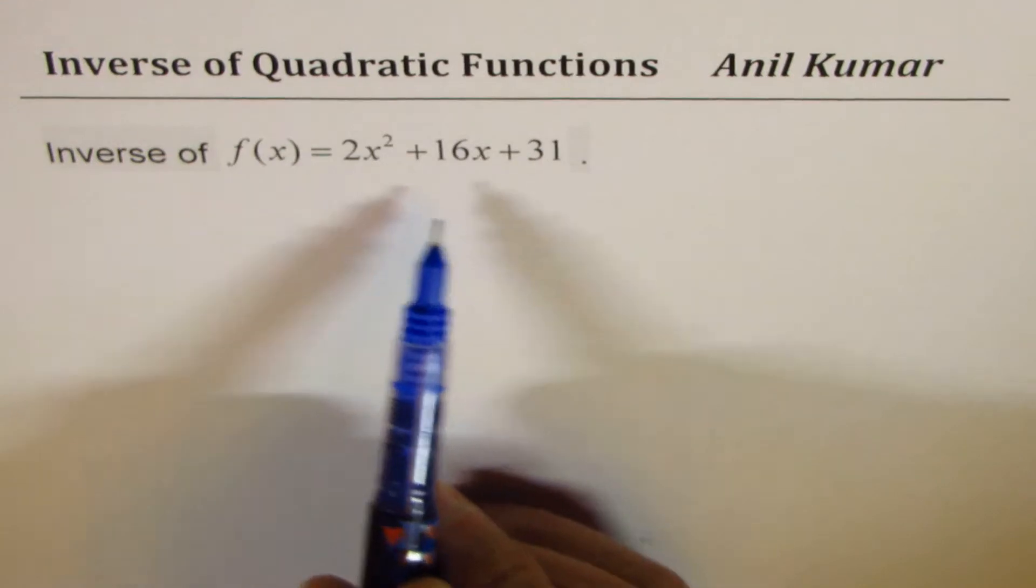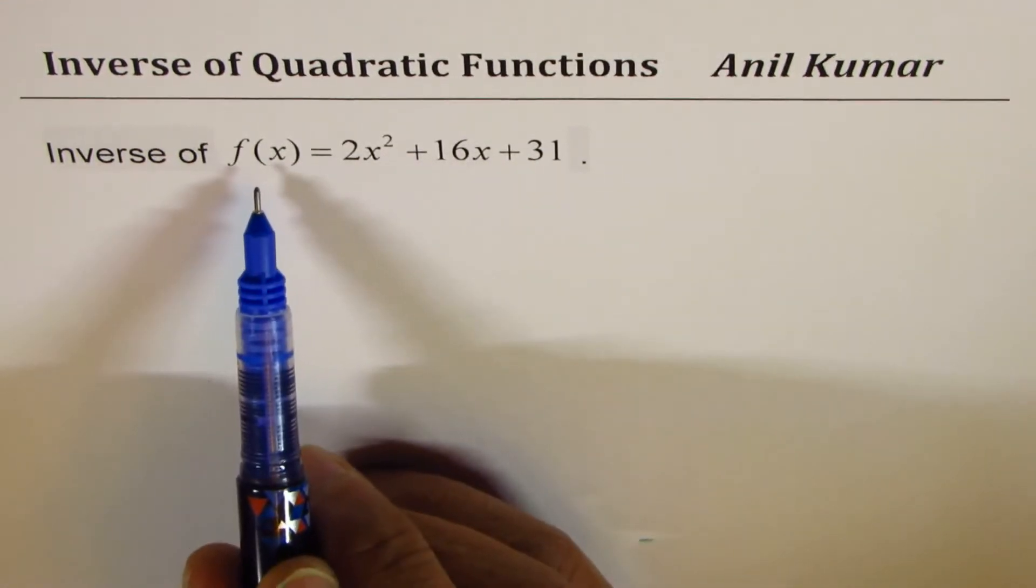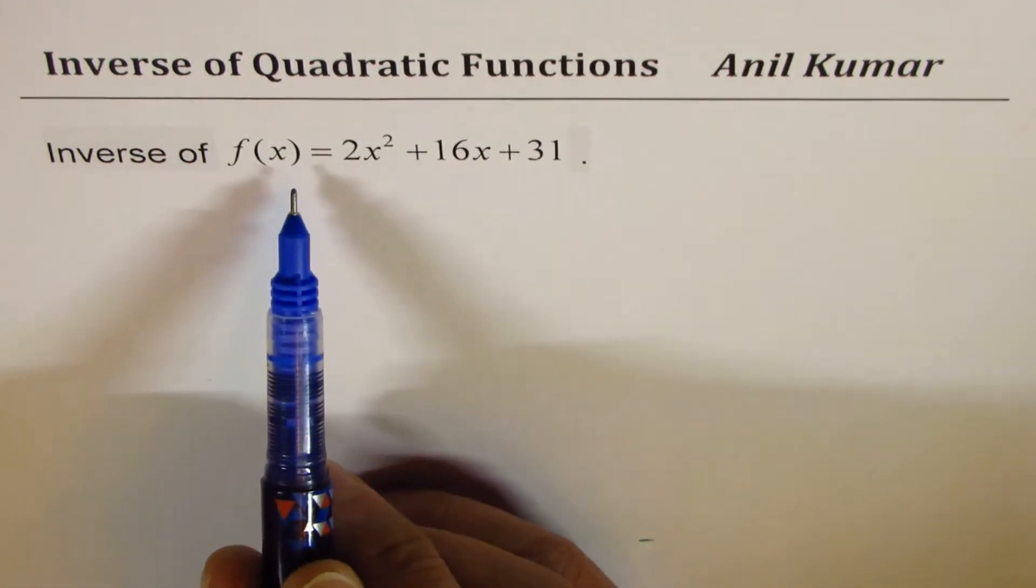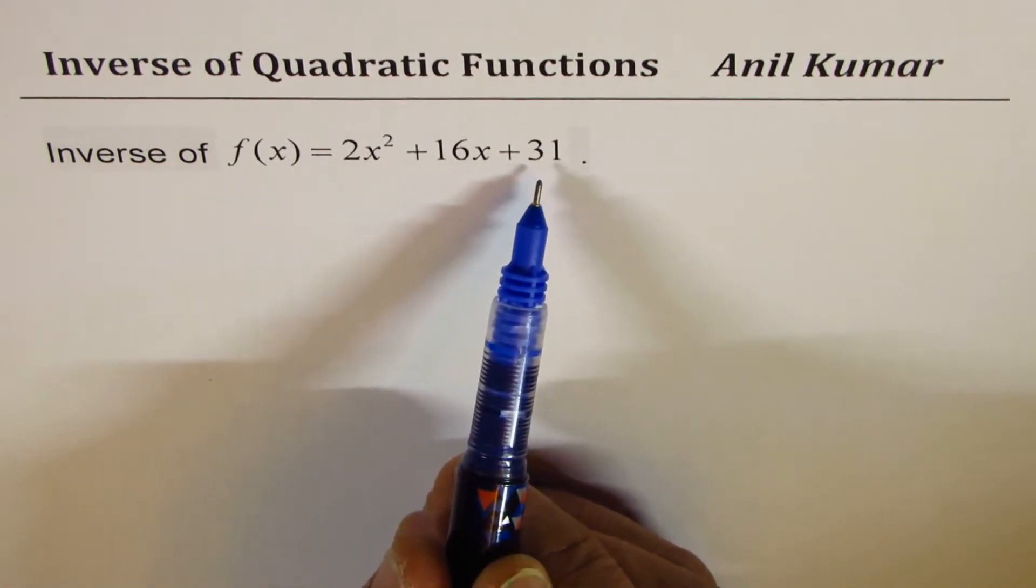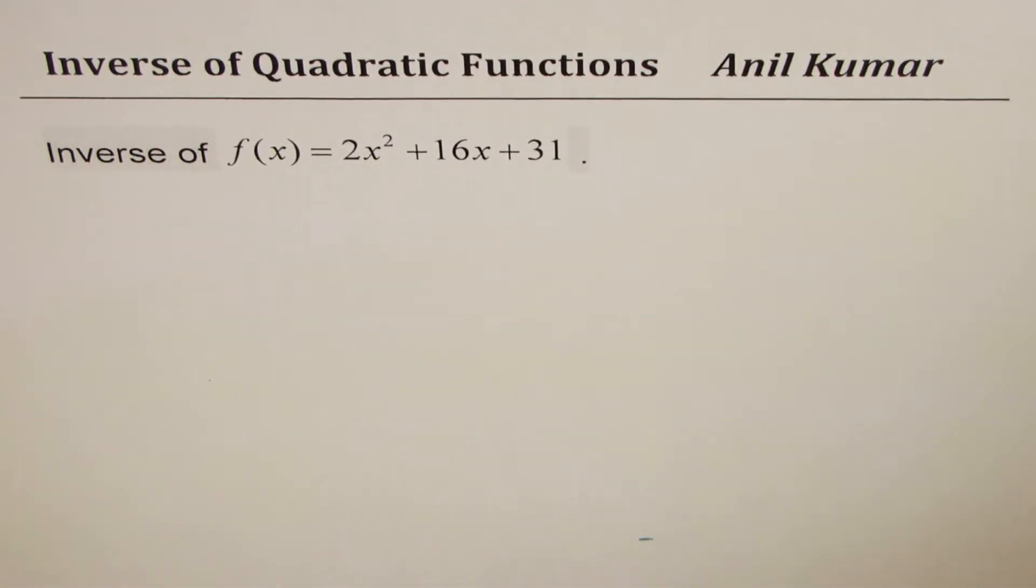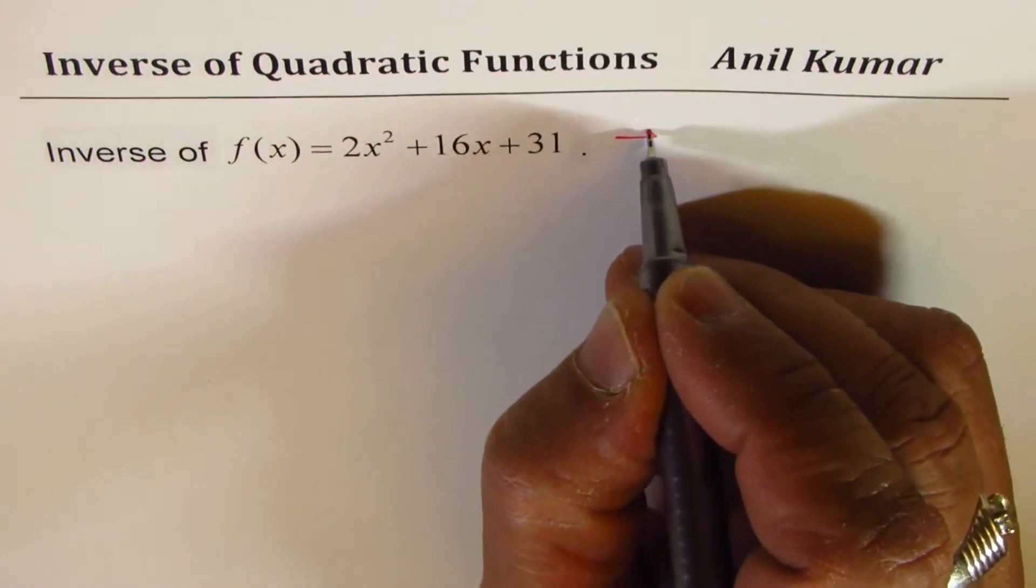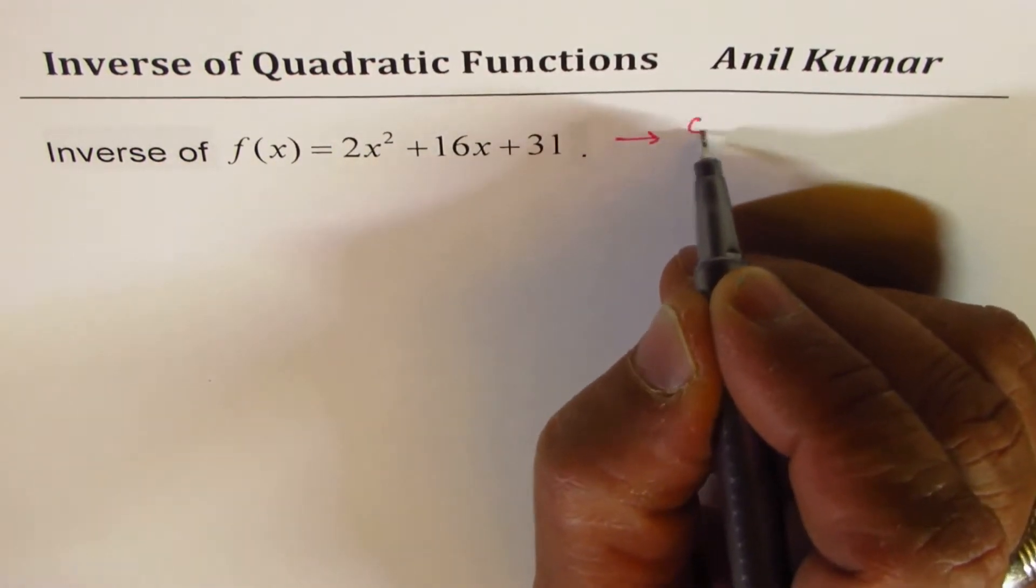If you are given in the standard form and you need to find the inverse, the best way is to complete the squares and write it in vertex form. So, the method will be to complete squares.